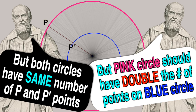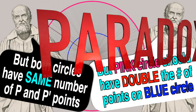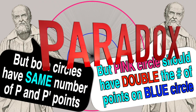The outer circle has twice the circumference of the inner circle, so the number of points on the outer circle should be double those on the inner circle — but obviously that's not the case either. For both circles to have the same number of infinitesimal points, either the circumferences must be equal, which is not true, or the outer circle's points should be twice as many, which is also not true. And that is the paradox.